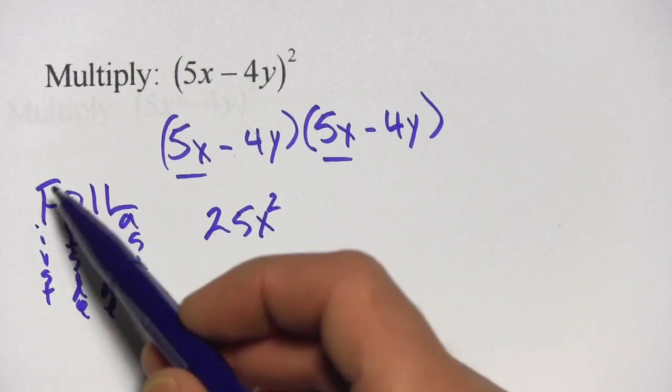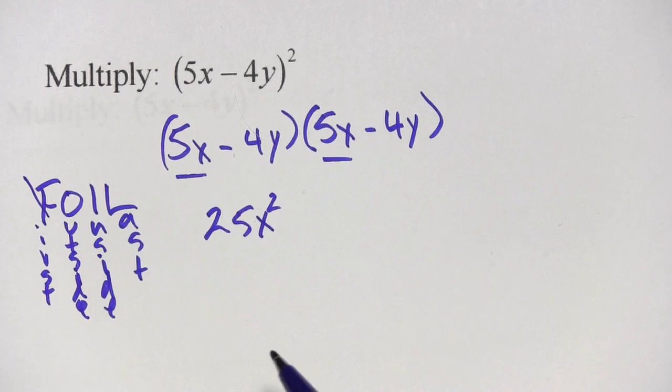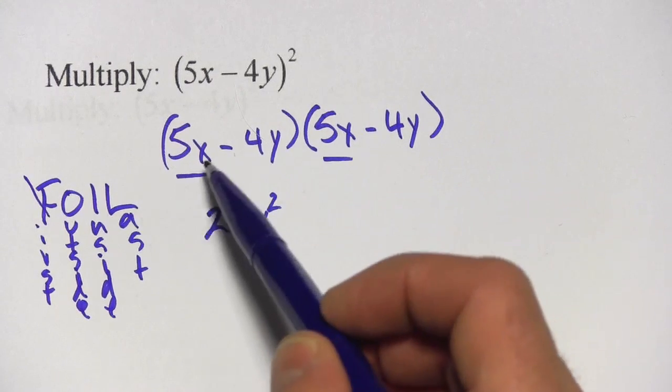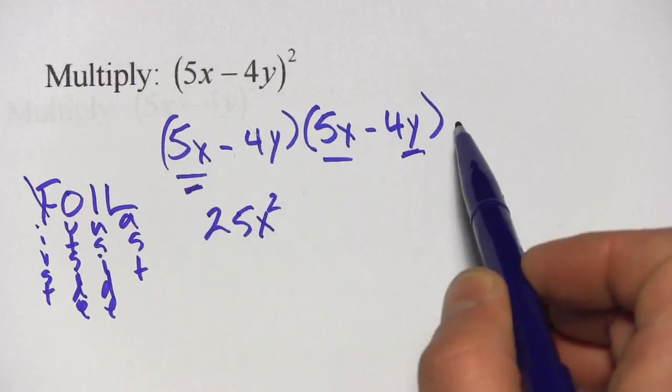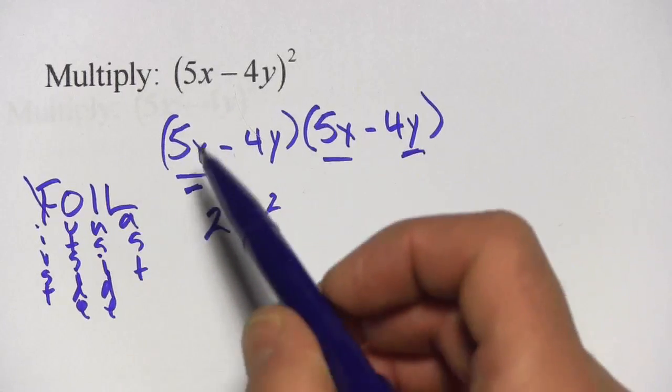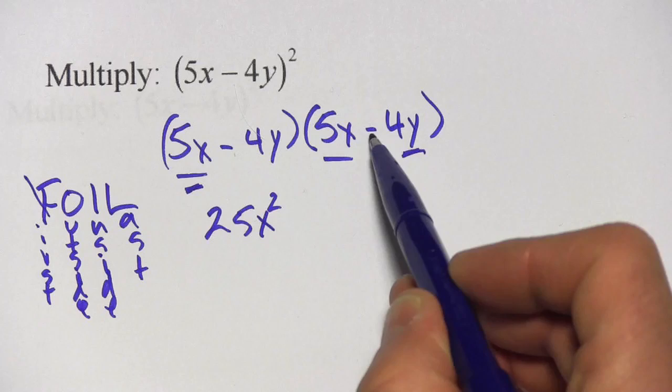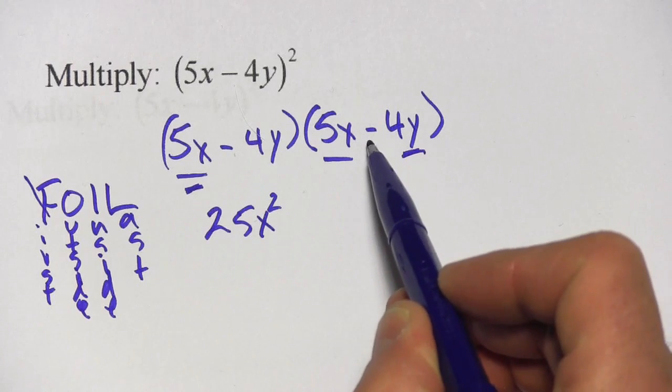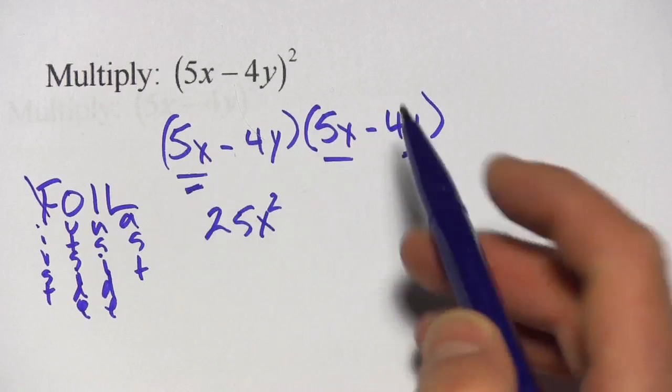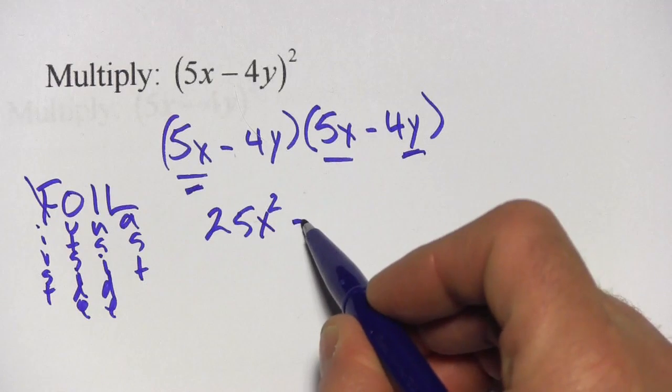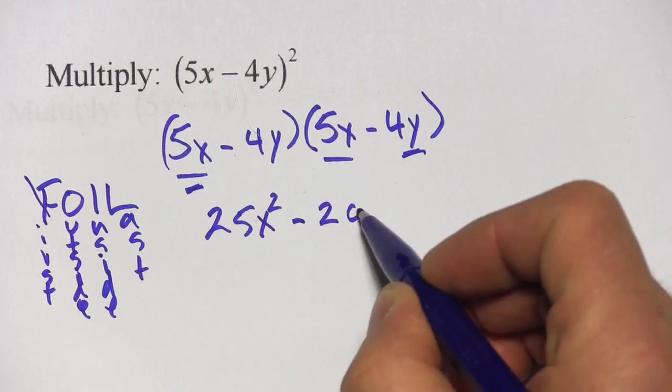Alright, we've done the F in FOIL. Let's do the O. The outside terms would be this one again and this one. So they are on the outside of this whole expression. So 5x times a negative 4y. Don't forget this negative sign. So 5 times 4 is 20. This is going to be a negative number though. 5 times negative 4 is negative 20.